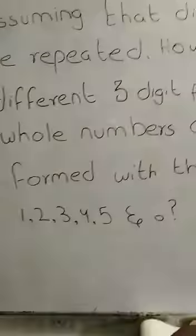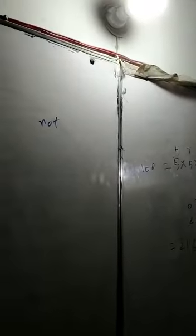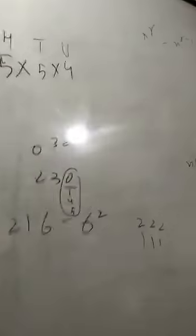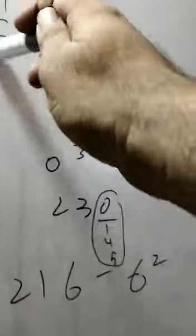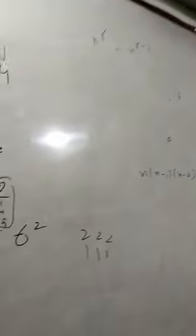When zero is included and repetition is not allowed, one number is placed here. For the tens place, all 5 numbers can be placed, including zero. Now if a number is placed in the hundreds, it won't be in the tens. So 5 numbers remain including zero.